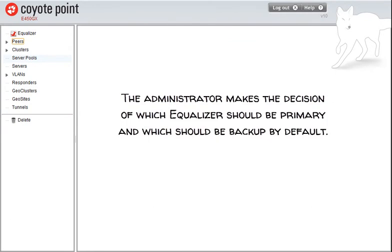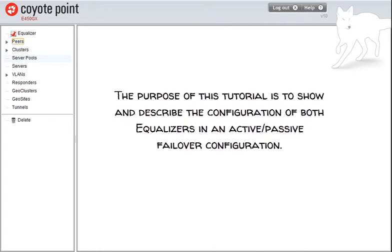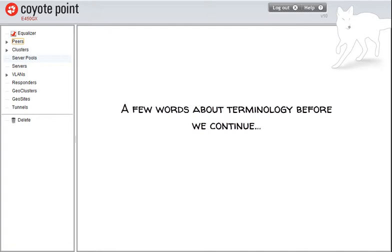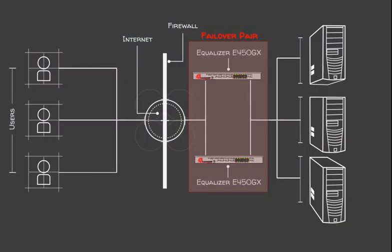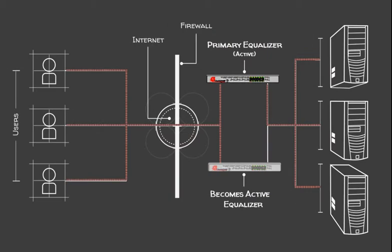The administrator makes the decision of which equalizer should be primary and which should be backup by default. A few words about terminology: the two equalizers configured into failover form what is called a failover pair. An equalizer in a failover pair is called a peer. The floating IP addresses are used to provide redundancy in a failover configuration — one machine is able to take over the IP address of the other and respond to ARP requests.